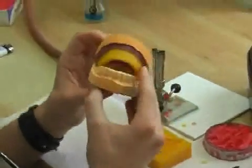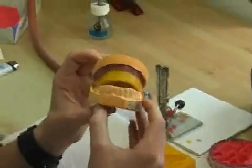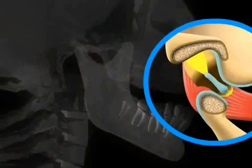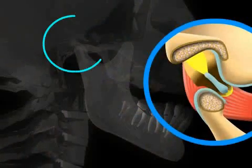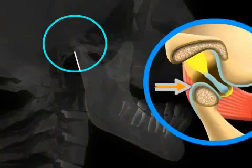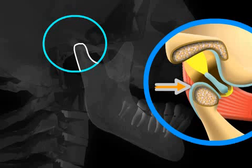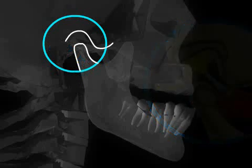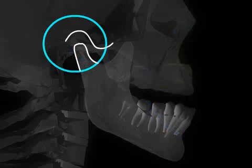Nowadays, it's assumed that the ideal position of the mandibular condyles in the large joint socket is at the top front. Therefore, one attempts to achieve this position in the lower jaw during the reconstruction of the bite.